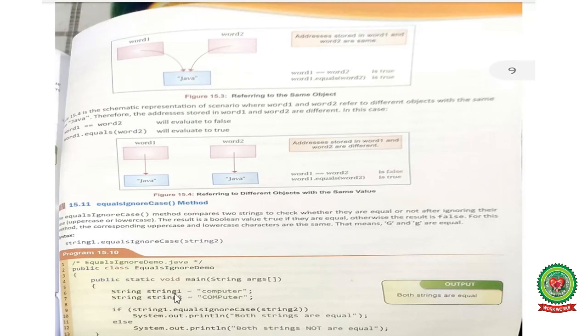Now in string one, I have written all the word characters computer in lowercase. In string two, COMP is in uppercase and UTER is in lowercase. But this is equals ignore case method, so it will not consider the cases and will return the output that both strings are equal.